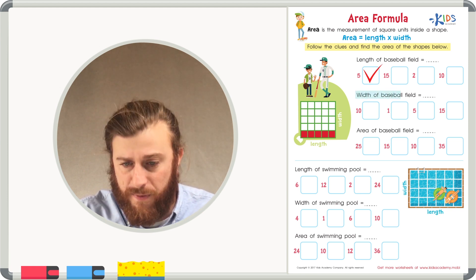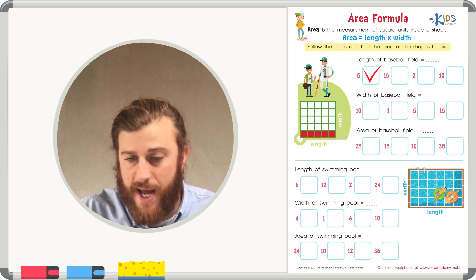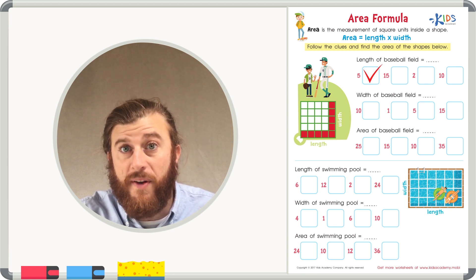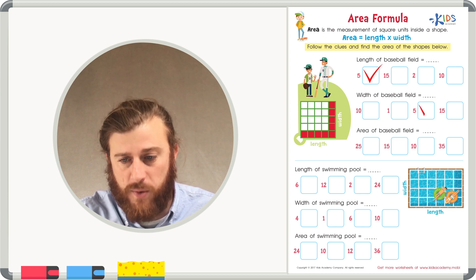The width of the baseball field, let's count the boxes up and down. One, two, three, four, five. The width of the baseball field is also five squares.